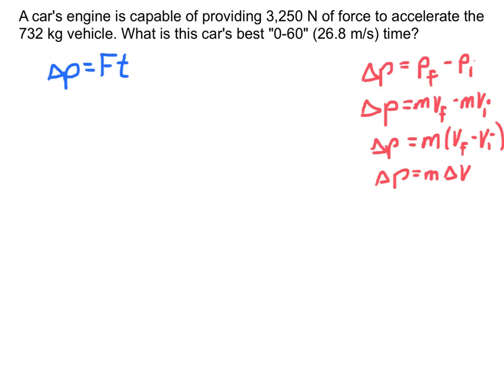Alright, so let me solve a couple of problems for you. First, let's deal with a car engine. And the car engine can provide a maximum force of 3,250 newtons to accelerate my just over 700 kilogram car. And I want to know what's the car's best 0 to 60 miles per hour kind of car lingo. That means the car is going from an initial 0 velocity all the way up to 60 miles per hour is 26.8 meters per second. So, how fast can it go? In other words, we're going to push the engine as hard as it can. We're going to use every ounce of force to keep our time as low as possible.